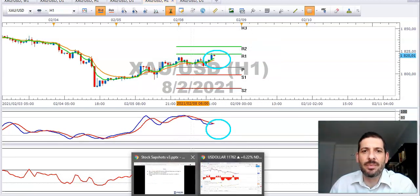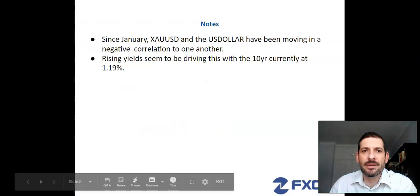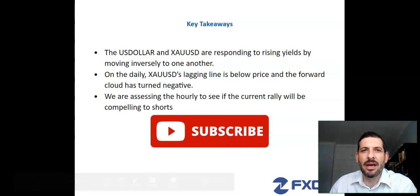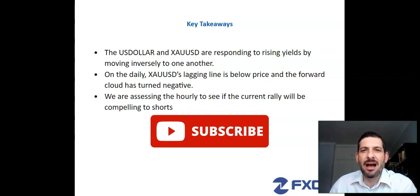Let's just end off with some key takeaways. The US dollar and gold are responding to rising yields by moving inversely to one another. On the daily, gold's lagging line is below price and the forward cloud has turned negative. And now we are assessing the hourly to see if the current rally will be compelling to shorts.